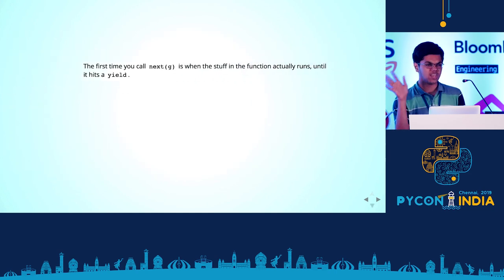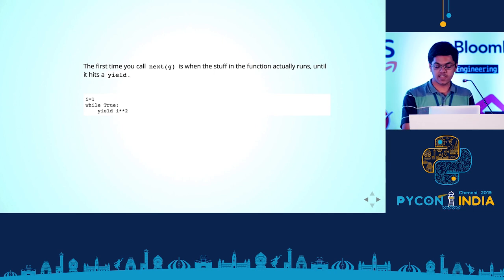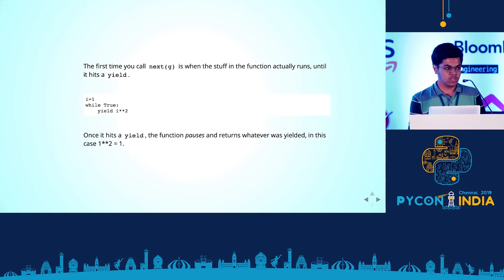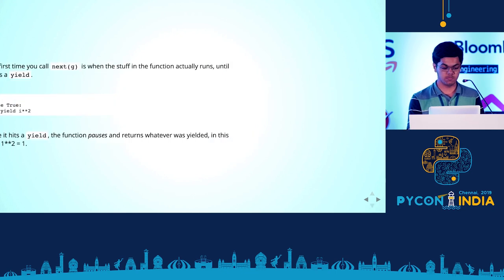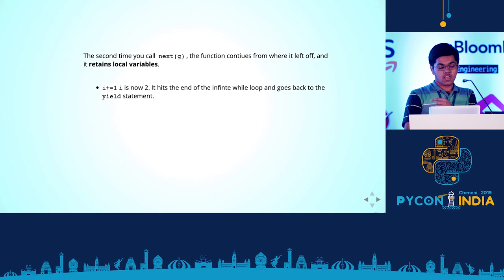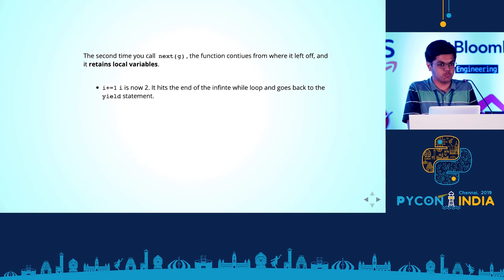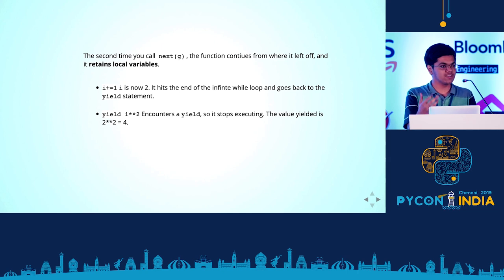Let's break this down line by line. The first time you call next is when the stuff in the function actually starts executing. In this case, it sets i to one, enters the while loop, until it hits the yield statement. Once it hits the yield, the function pauses executing and returns whatever you were supposed to yield — in this case, one squared, so that's one. When you call next again, the function continues from where it left off, retaining all local variables. The next statement is i += 1, but it remembers i was one, so it becomes two, loops back, hits the yield again, and that's why you get two squared equals four.